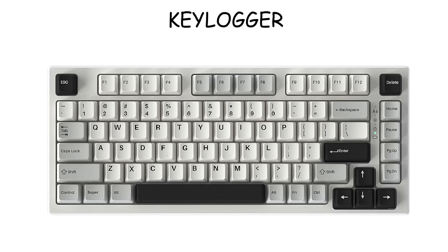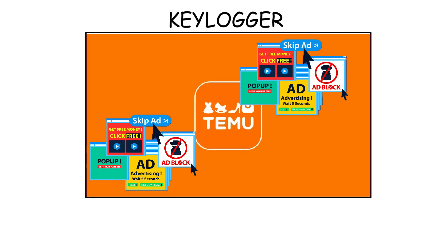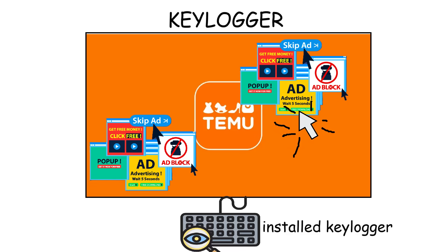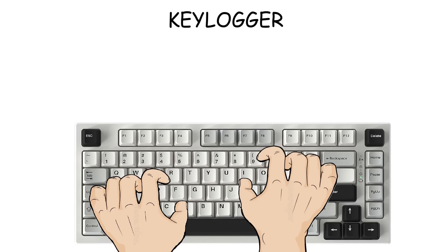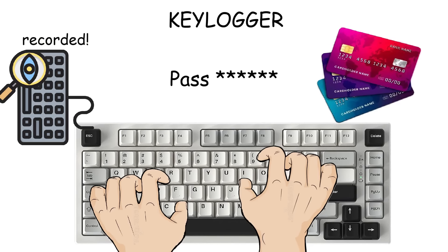A keylogger is malware that secretly records keystrokes on a victim's keyboard. This can happen when a malicious ad is placed on a popular online shopping site. When a user clicks on the ad, a keylogger gets installed without their knowledge. As the user types their login credentials, credit card, and payment information, the keylogger records everything.